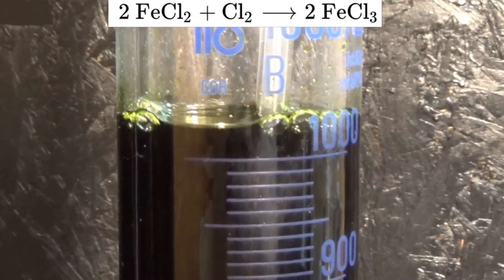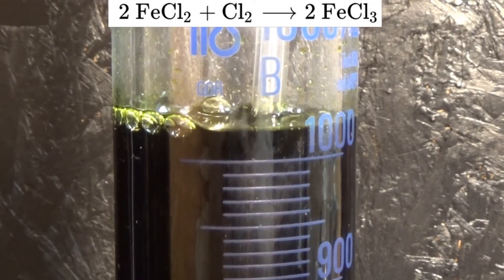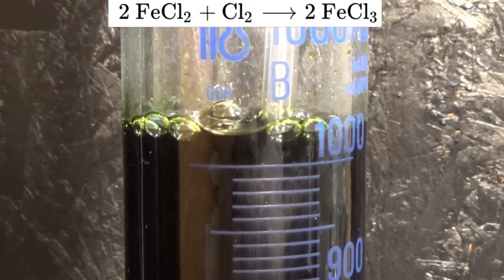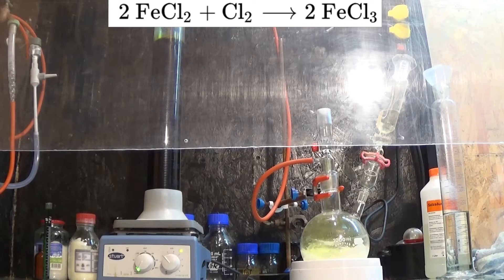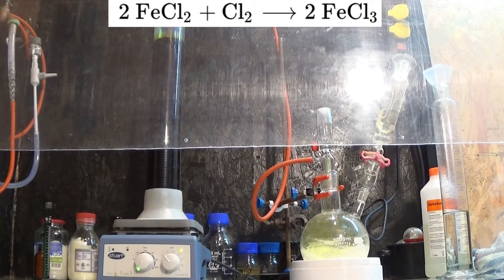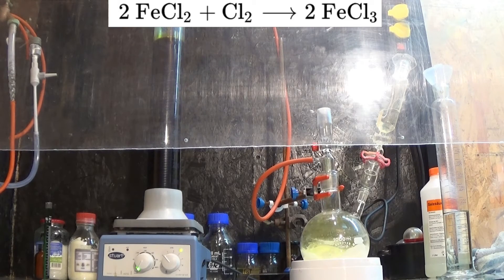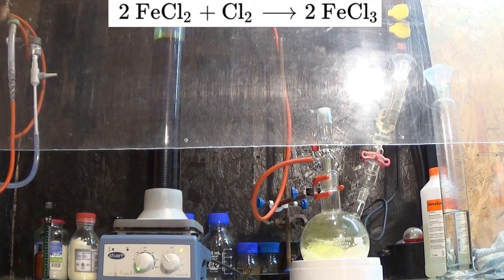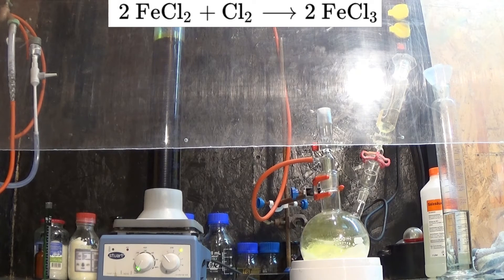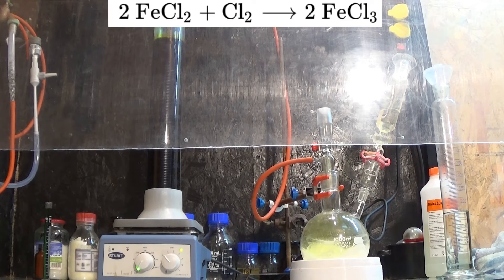Over the course of the reaction, the green solution turns dark and yellow on its sides. This is the clear indicator that the iron 2+ ions are oxidized to iron 3+ ions. The reaction is finished when no more chlorine gas is absorbed. The volume of the mixture increased by around 50 milliliters.